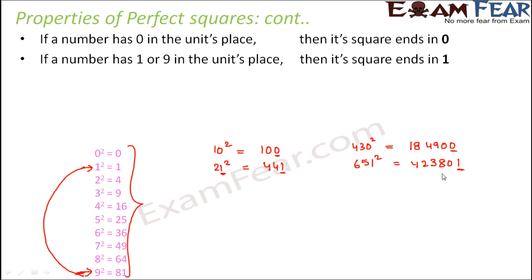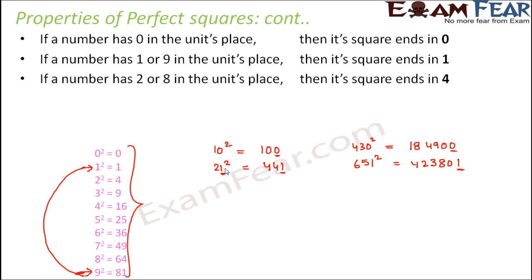So what I'm trying to say is, even without doing the actual multiplication, just by looking at the units place of a particular number you can see what the units place in the square will be. If a number has 2 or 8 in the units place, then its square ends in 4 — because 2 squared is 4 and 8 squared is 64. For example, 22 squared is 484, and any bigger number ending in 8 will also have its square end in 4.